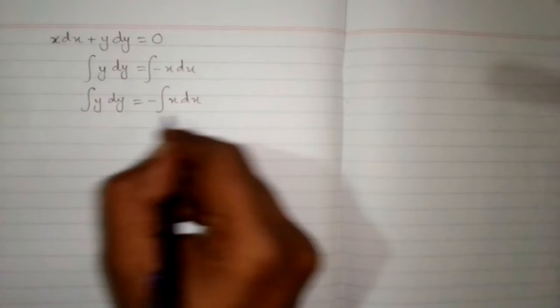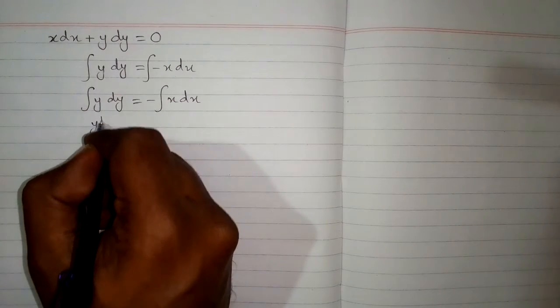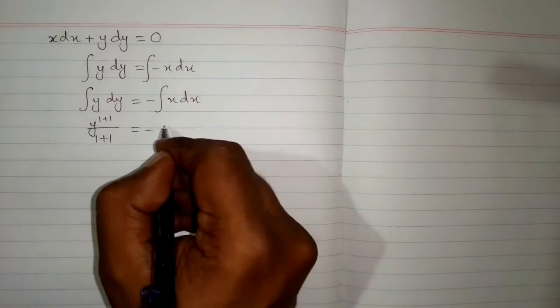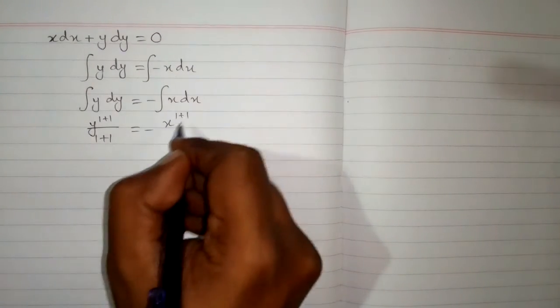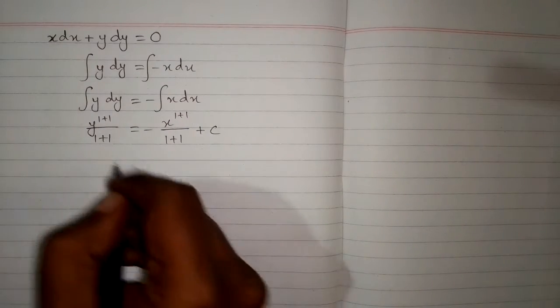Now we will apply the power rule of integration. So we have y to the power 1 plus 1 upon 1 plus 1 is equal to minus x to the power 1 plus 1 upon 1 plus 1 plus c, where c is the constant of integration.